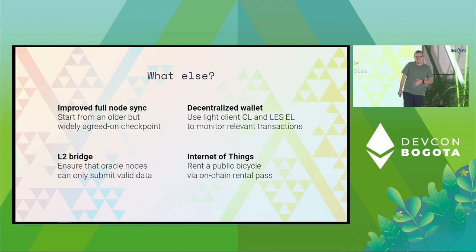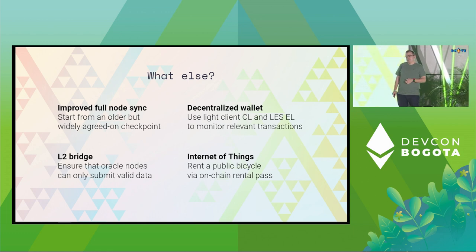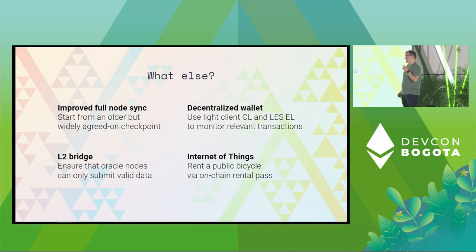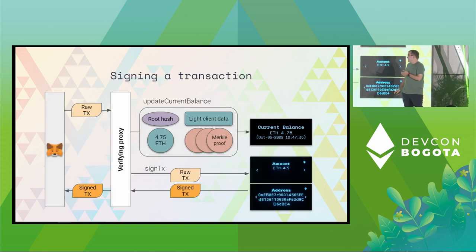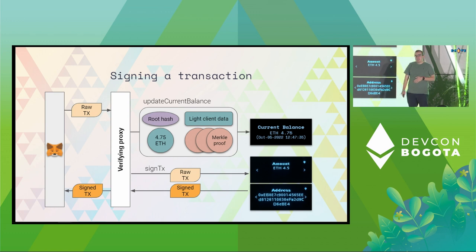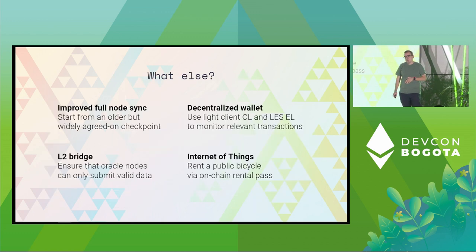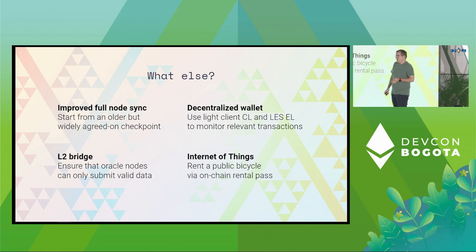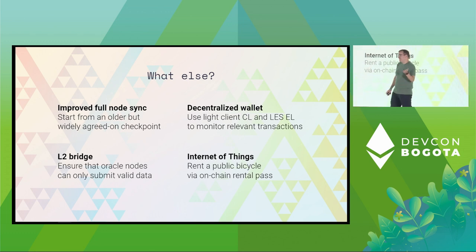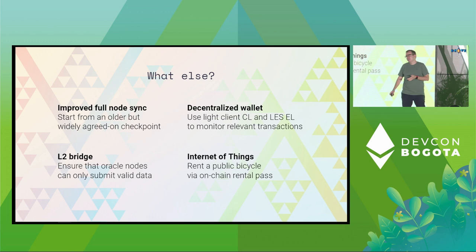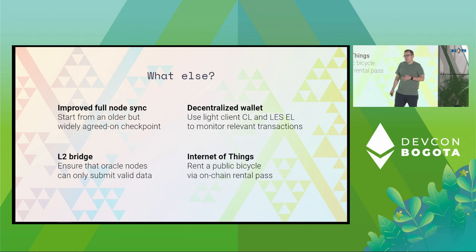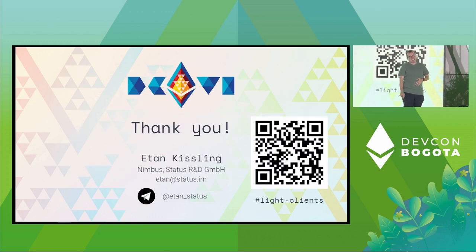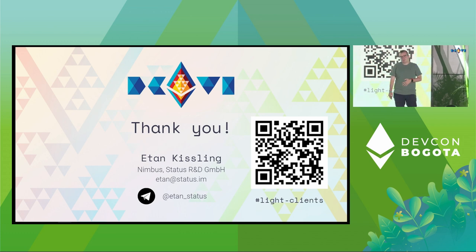For IoT devices: you can put a rental pass for bicycles in your wallet on-chain — like a weekly pass — and send this data to the bicycle lock. Just like with the Ledger device, it can verify that you own that rental pass and are allowed to open the lock. Or for an electric car charger at home that you want your friends — but not just anyone — to use: put a light client on there. It doesn't even need to be connected to the internet.